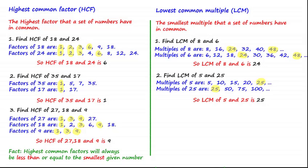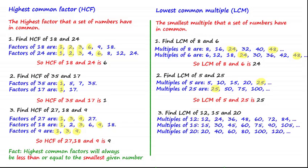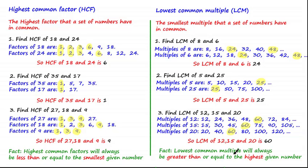Let's move on to the last example. Find the lowest common multiple of 12, 15, and 20. As in the previous examples, we write a list of multiples for each number. From this list we can see that the first common multiple between these numbers is 60, which means the lowest common multiple of 12, 15, and 20 is 60. A useful fact about the lowest common multiple is that it will always be greater than or equal to the highest given number within a set of numbers.